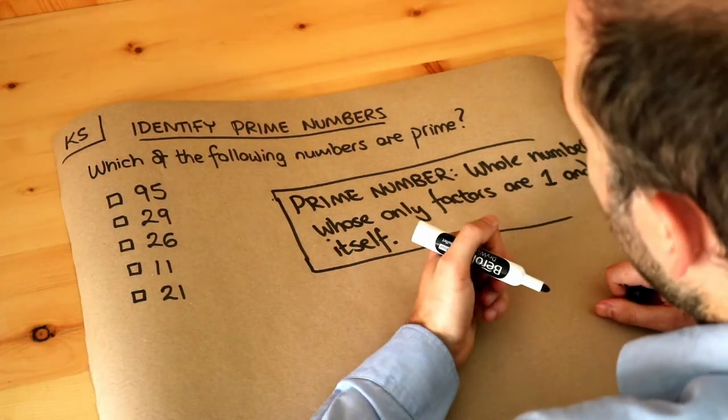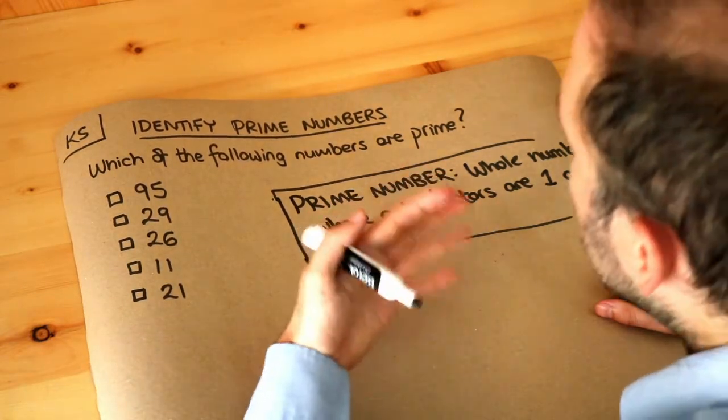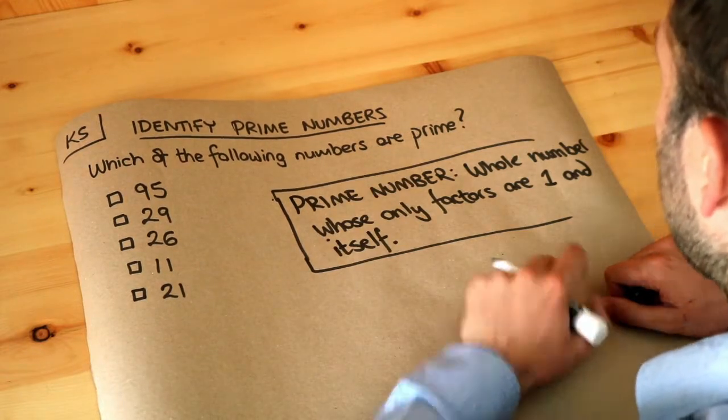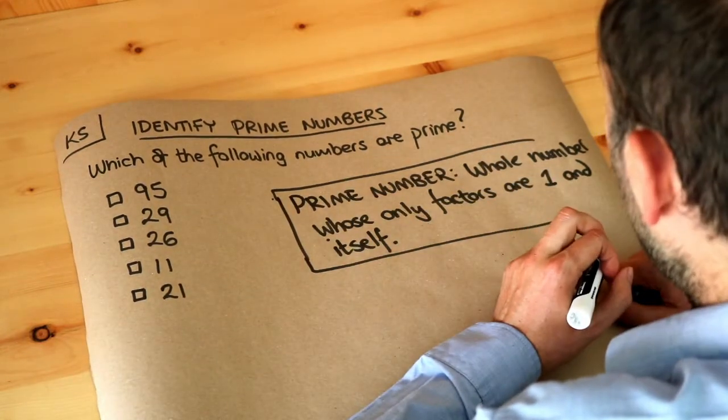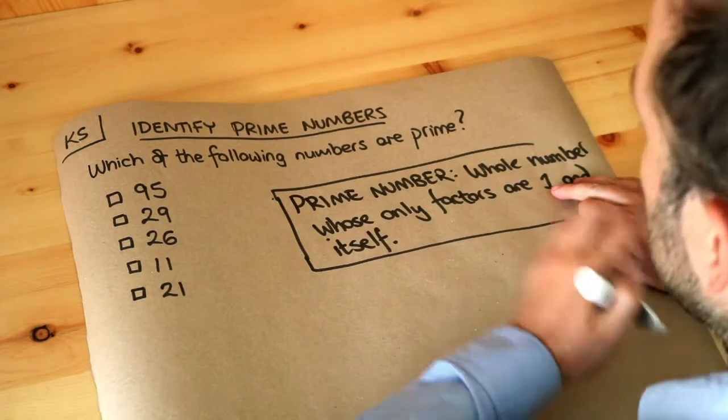If you had 15 friends, you could have three teams of five or five teams of three. It's more divisible, whereas prime numbers are not very divisible. You can only divide them by one, because any number you can always divide by one and itself. Those are kind of exceptions as factors.